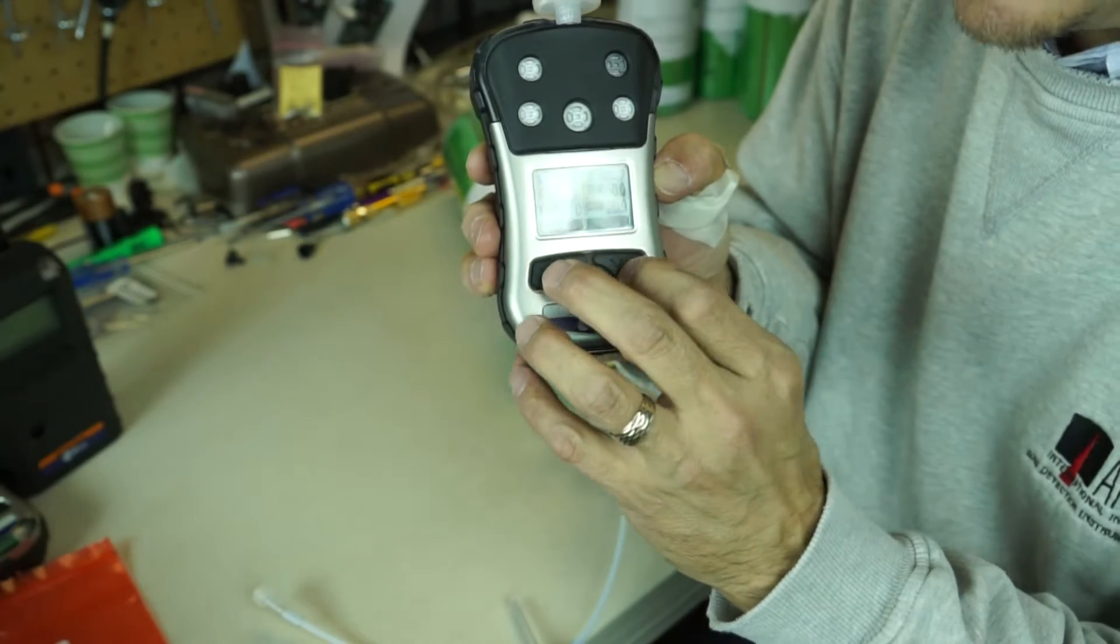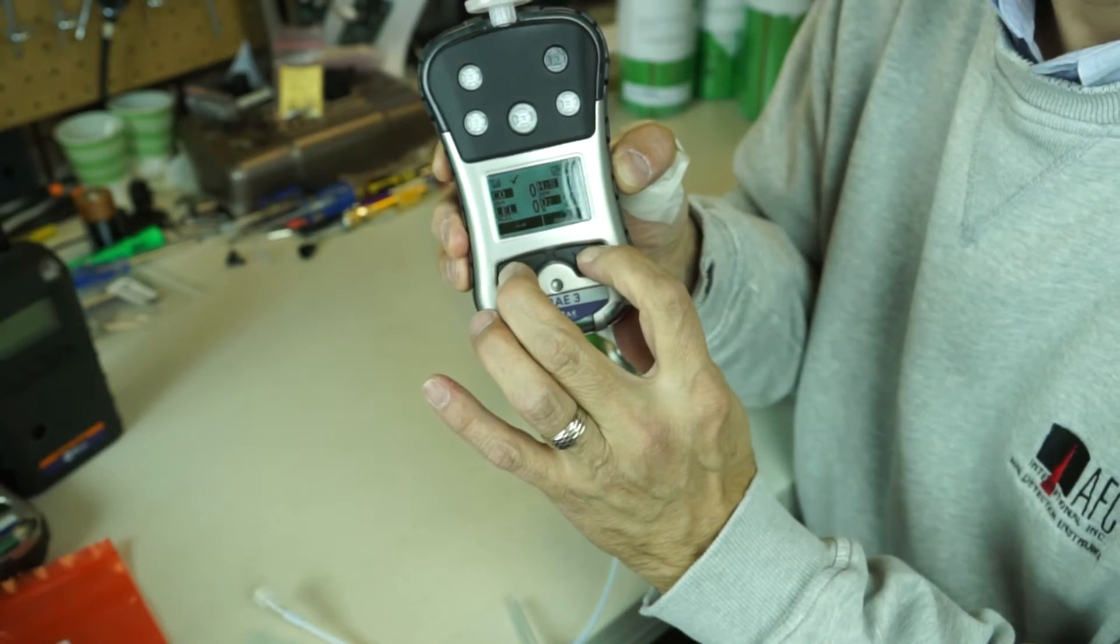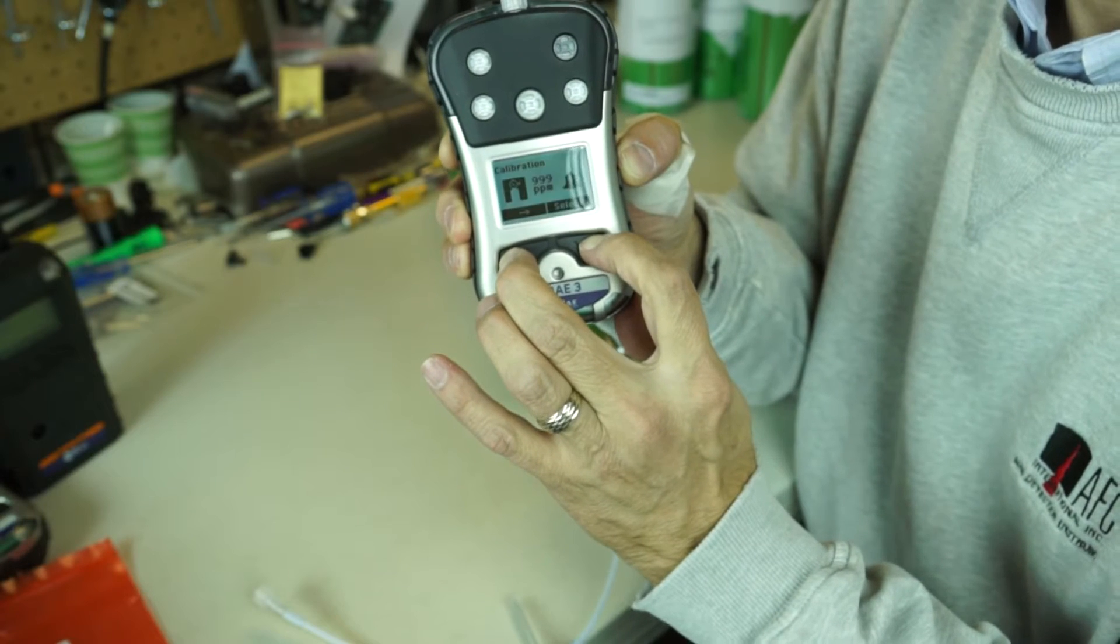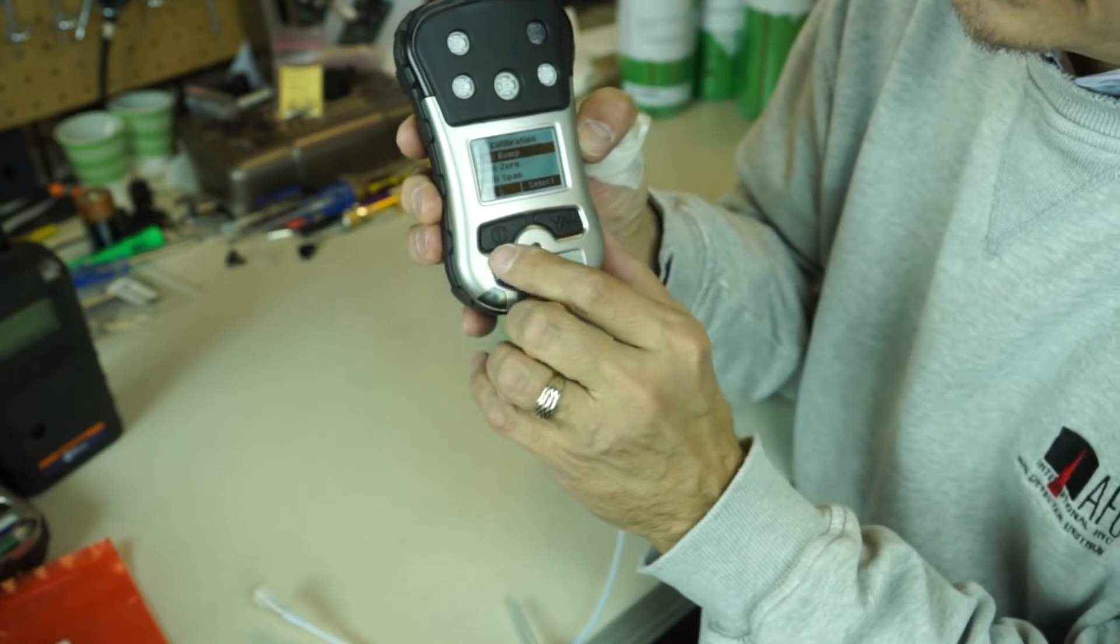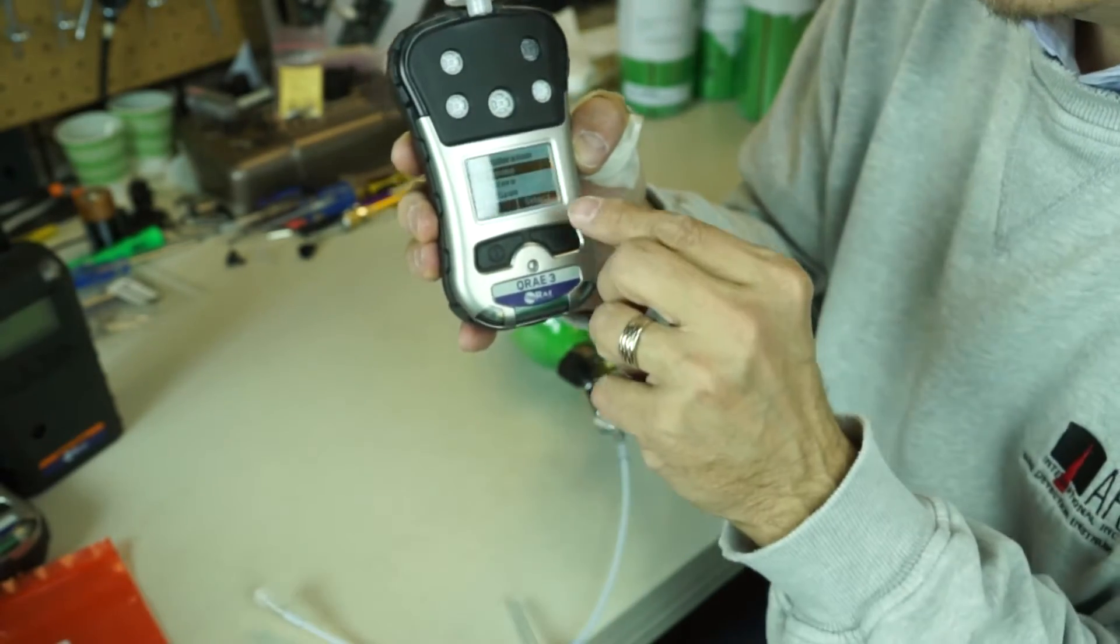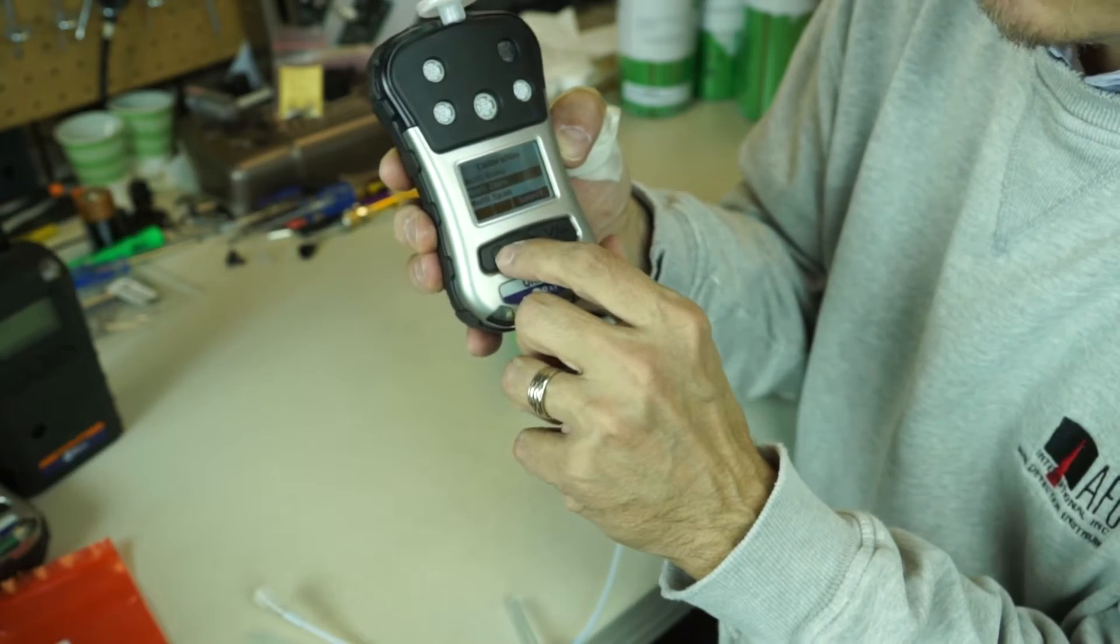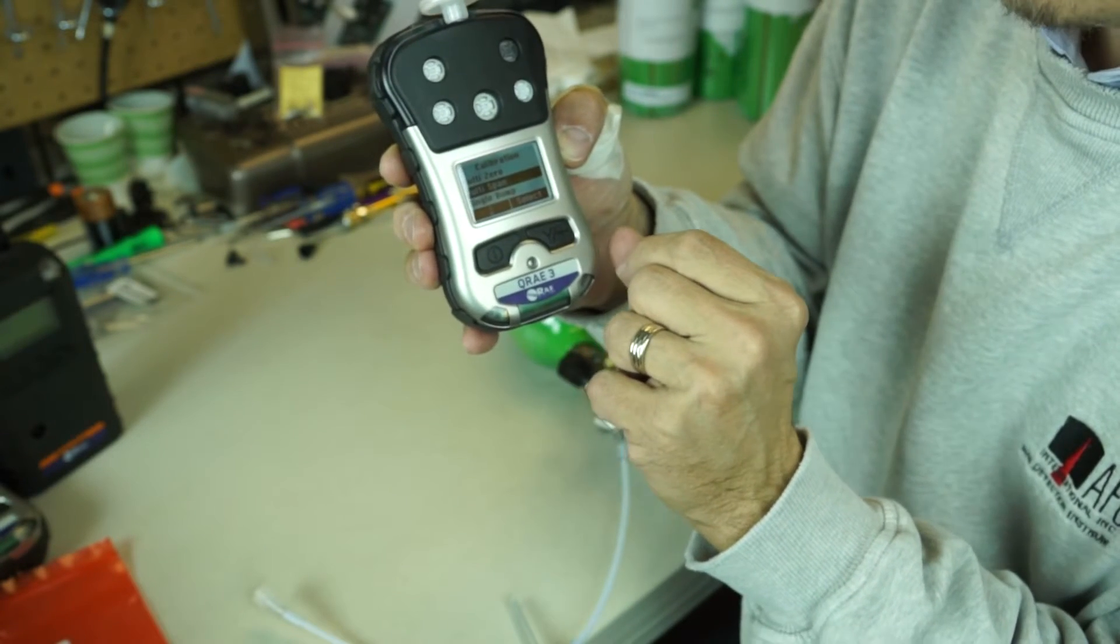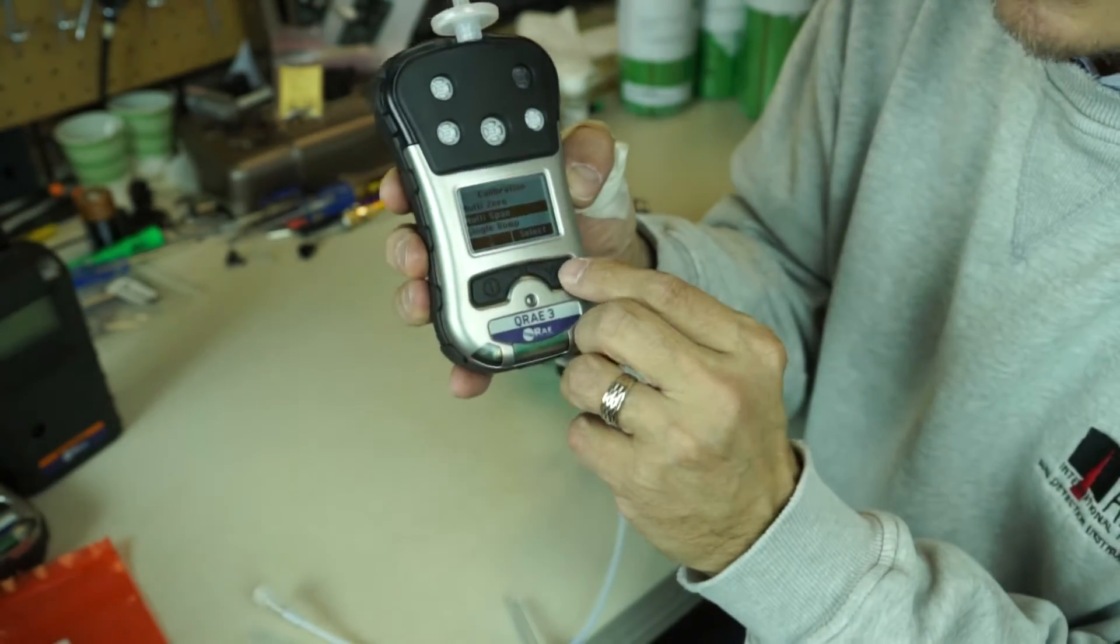And I'm going to go ahead and get into the calibration mode. On Ray systems it's mode in no, or mode in yes in this case. And it's going to ask me for a password. Sometimes if it's not password protected you can go right into the calibration. And you'll scroll down until you see multi-span. Can you see that? Multi-span. I'm going to hit yes and select.